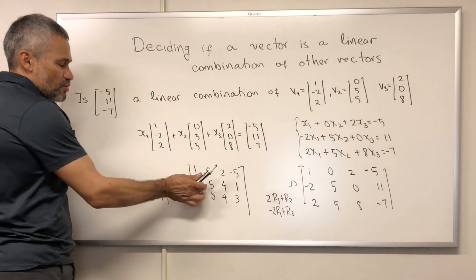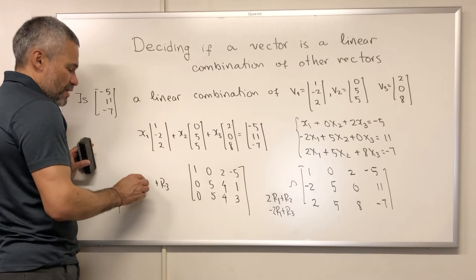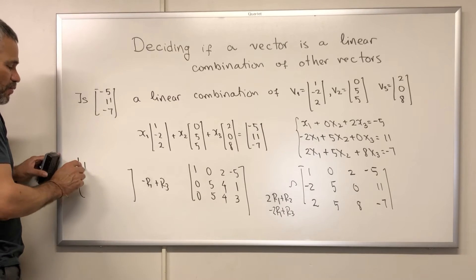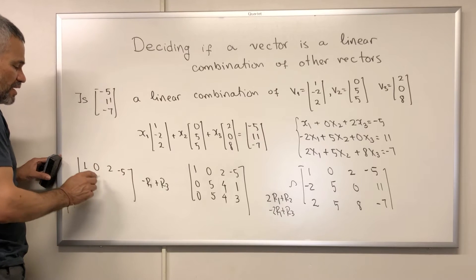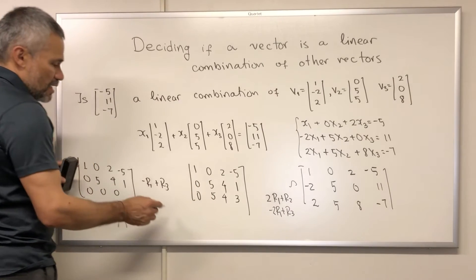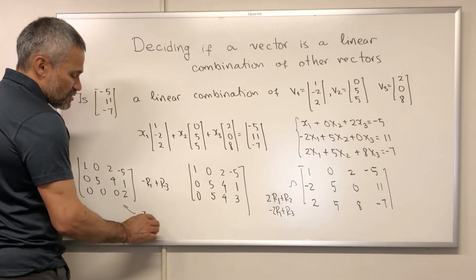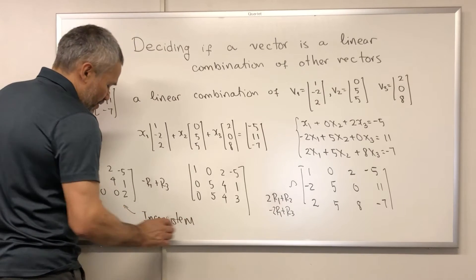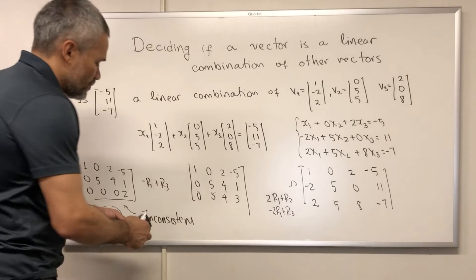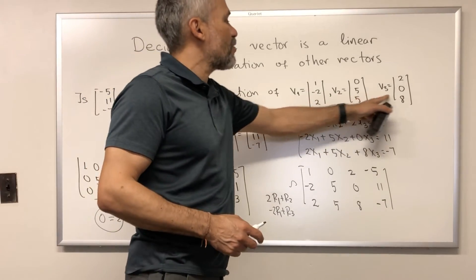Now I'm going to use this 5 to put a 0 below it. I change row 3 with row 3 minus row 2. I get the matrix 1, 0, 2, negative 5; 0, 5, 4, 1; 0, 0, 0, and 2. Notice this matrix is the augmented matrix of an inconsistent system. This last equation is essentially saying 0 equals 2, which is never true. Therefore, this vector is not a linear combination of these three.